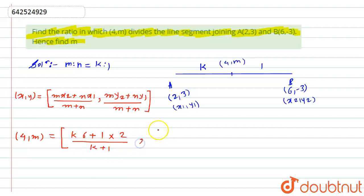Similarly, for the y coordinate, it will become k times (-3) plus 1 times 3, divided by k plus 1.